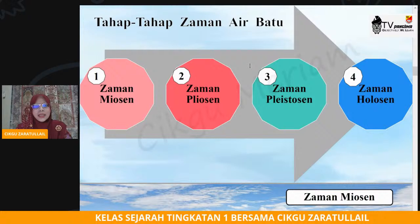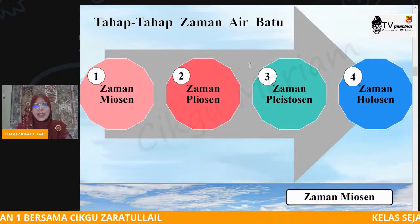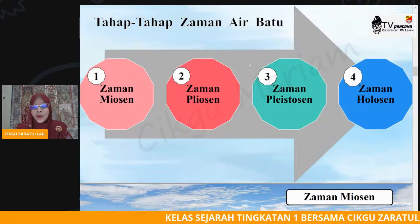Jadi cuba ingatkan sekali lagi. Tahap zaman air batu ada empat: yang pertama zaman Miosen, yang kedua zaman Pliosen, ketiga zaman Plistosen, dan zaman yang keempat ialah zaman Holosen.